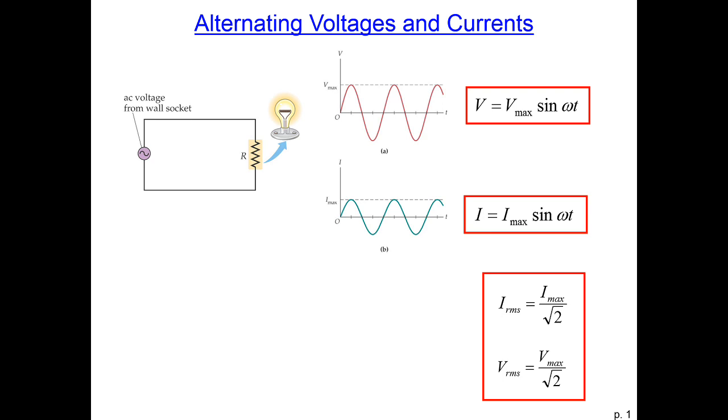Alternating current is the kind we have in the plugs in our homes. If you plug a light bulb into an AC line, the voltage and current alternate back and forth rapidly, and the light bulb flickers on and off very quickly. We wouldn't notice the flickering because the oscillation causes the light bulb to turn on and off about 120 times per second—too fast for our eyes to see.